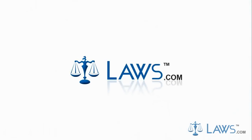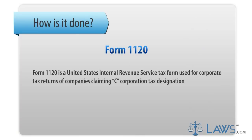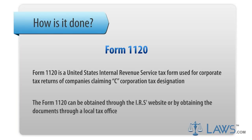Laws.com Legal Forms Guide. Form 1120 is a United States Internal Revenue Service tax form used for corporate tax returns of companies claiming C Corporation Tax Designation. The Form 1120 can be obtained through the IRS's website or by obtaining the documents through a local tax office.